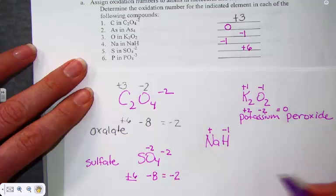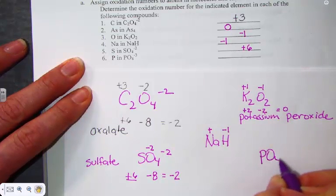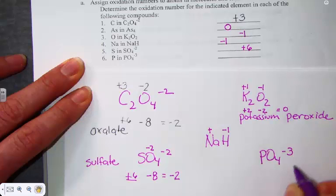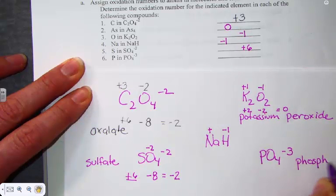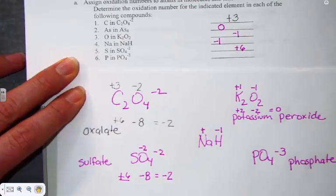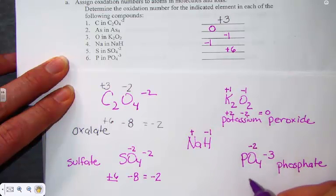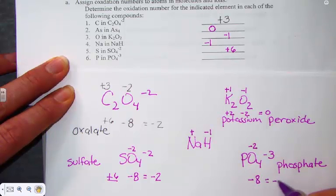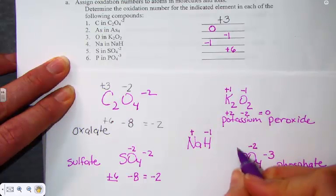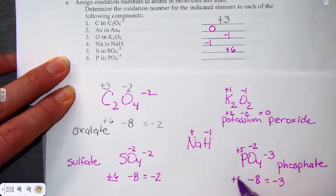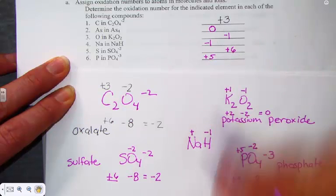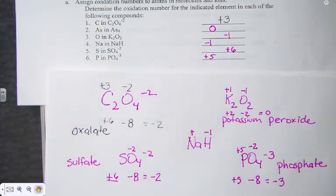The last example, another polyatomic ion called phosphate, PO4 minus 3. On our polyatomic ion chart, PO4 minus 3 is named phosphate. We know oxygen to be a minus 2, giving a total contribution from the oxygens to add to a negative 8. Overall, it must be a minus 3. So therefore, the positive charge, a positive 5. A positive 5 and a negative 8 land me at a negative 3. So a positive 5 is the oxidation state of phosphorus in phosphate.